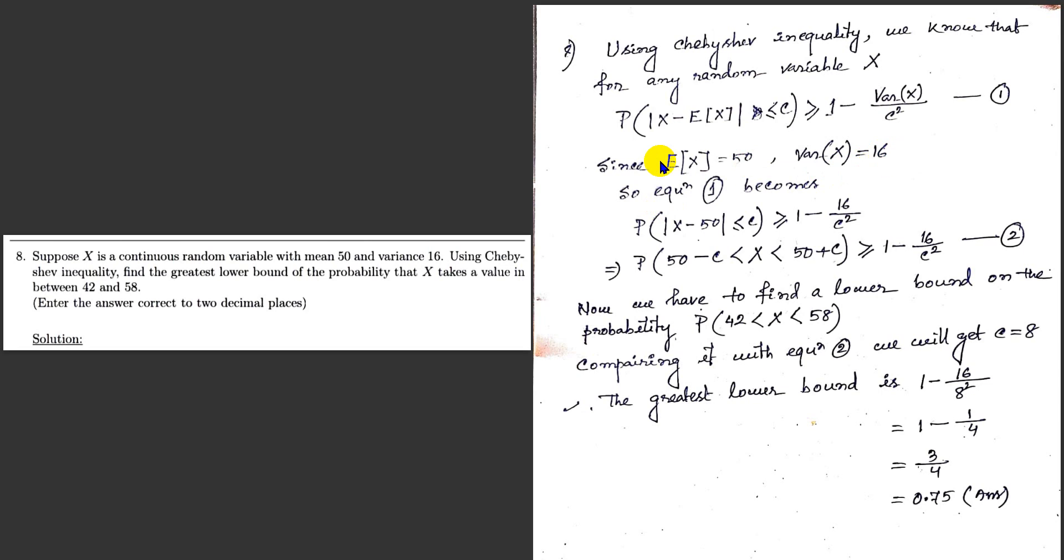Putting this value in equation 1, we get probability of mod of X minus 50 less than or equal to c is greater than or equal to 1 minus 16 by c squared.